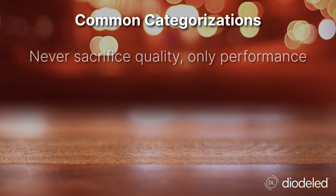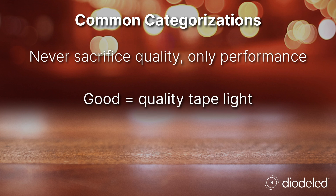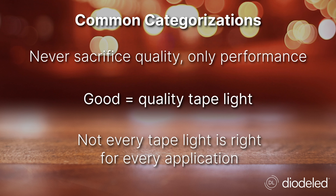You've probably noticed again the prevailing theme throughout these videos: plan ahead. Be prepared to have a different tape light system ready to go for each of these three major types of projects. The key is to never sacrifice quality, only performance. Your good option is still a quality, reputable tape light that you feel confident in selling to your customers — it just might not have the performance levels of your better or best solution.